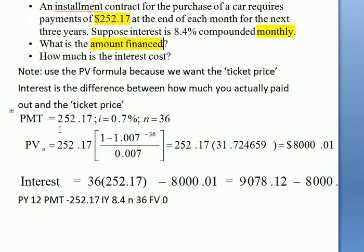Our PMT is 252.17. i is 0.7%, which is our annual rate 8.4% divided by 12. N is 36 because we have 3 years monthly, 3 times 12 is 36.